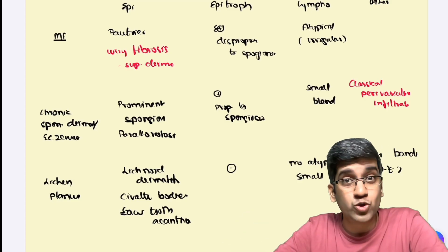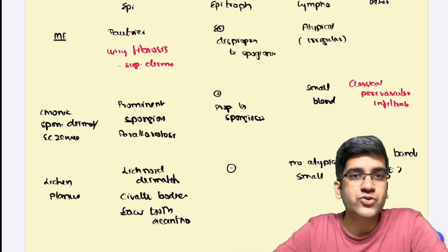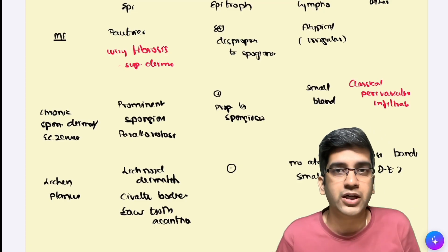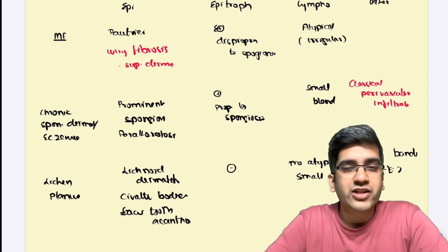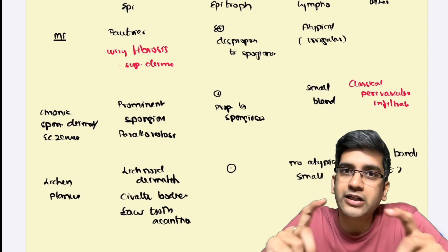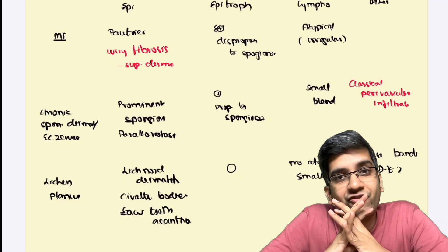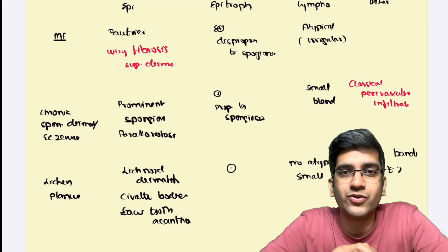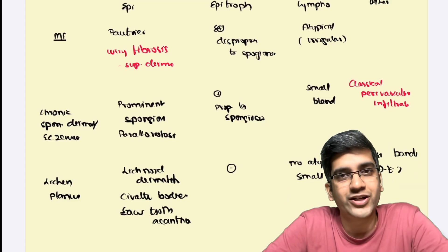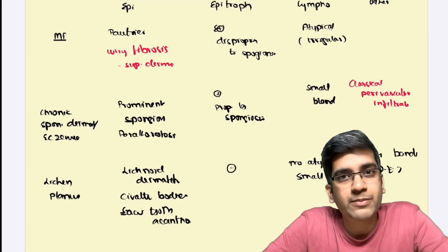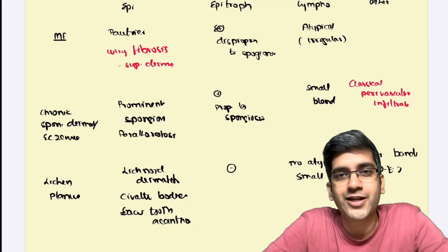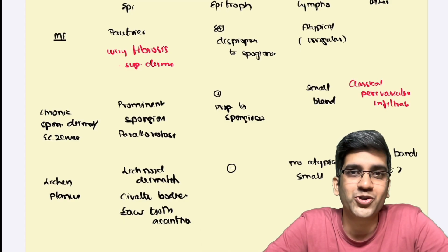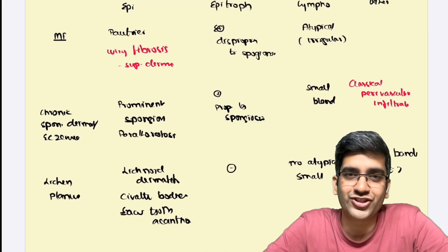There are many other differentials to compare with mycosis fungoides — including PRP (pityriasis rubra pilaris), cutaneous lupus erythematosus, and large plaque parapsoriasis. I'll stop the lecture here and upload the video in the RXDX app under the dermatopathology section, along with a detailed comparison table in the notes. If you're not subscribed, click subscribe and check the description for our Telegram channel and WhatsApp community. Thank you for listening — see you soon.